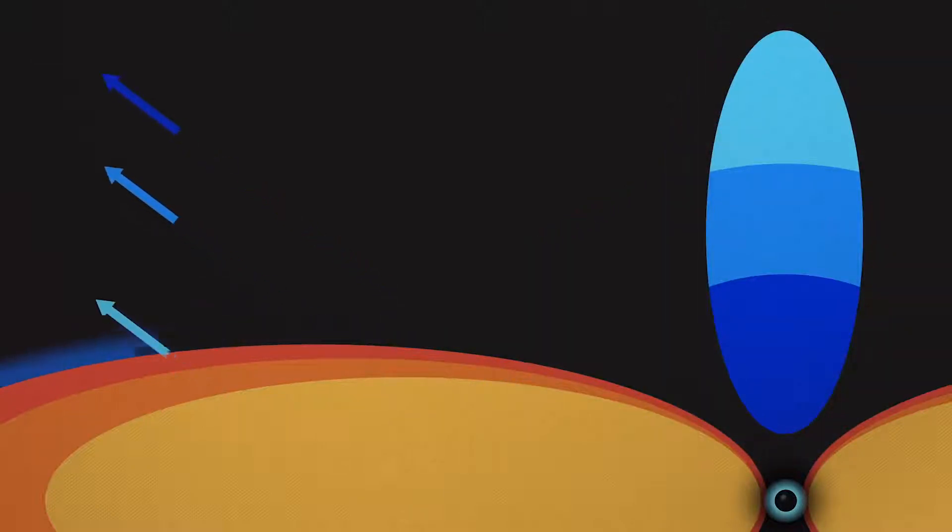Iron atoms in the disk absorb X-rays from the corona and then re-emit them. Gravitational distortion of space-time stretches the wavelengths of the X-rays, reducing their energy. The farther from the black hole they are, the less the light is affected.